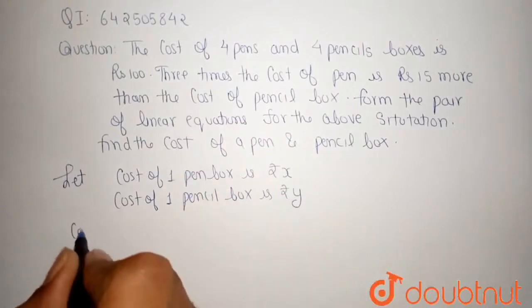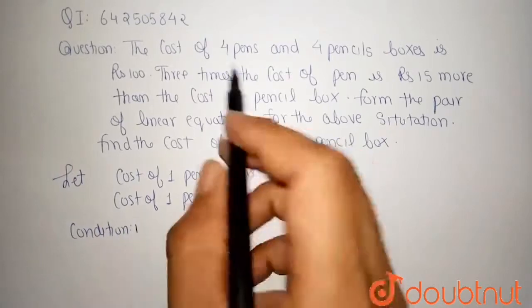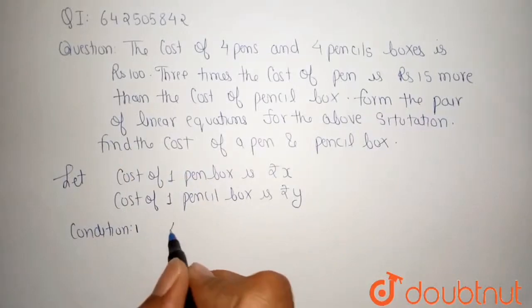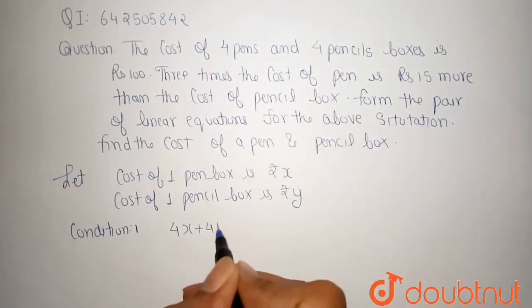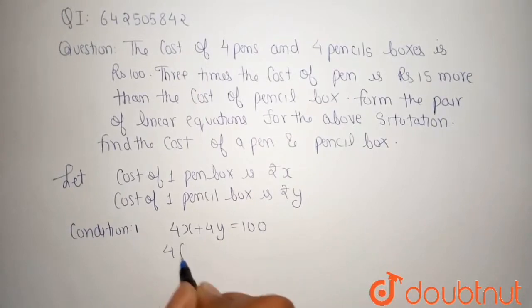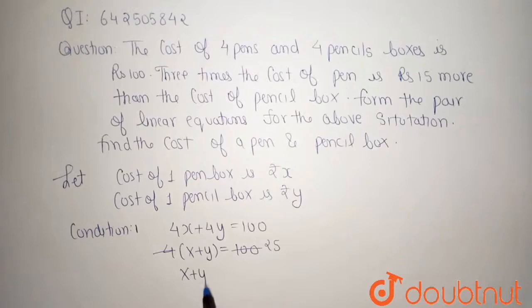According to the condition number first, 4 pens and 4 pencil boxes price is rupees 100. That means 4x plus 4y is equal to 100. Take 4 as a common, so it becomes x plus y is equal to 25. This is our first equation.